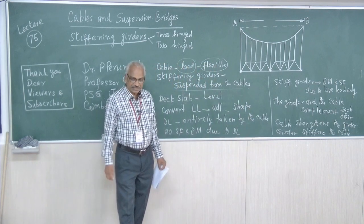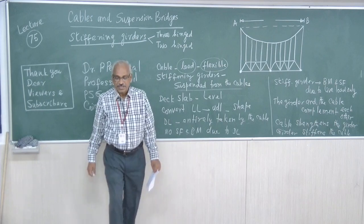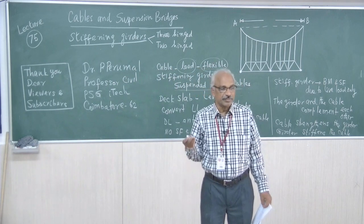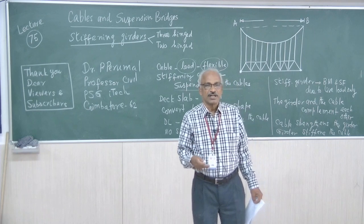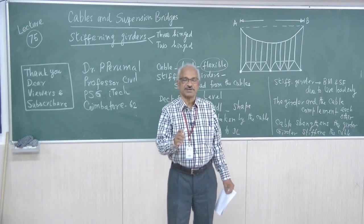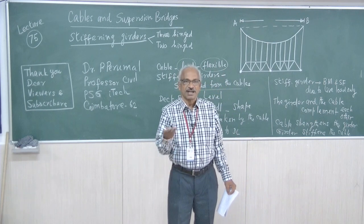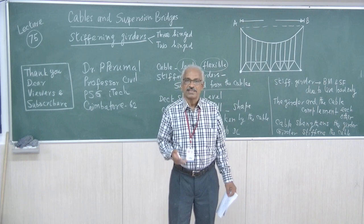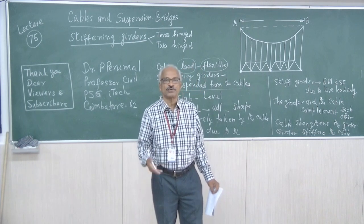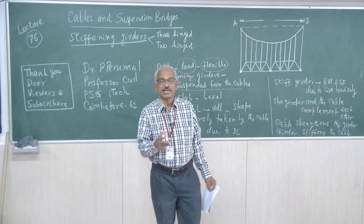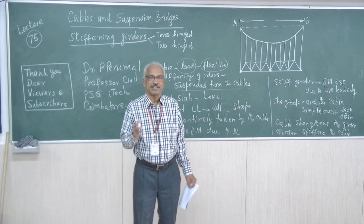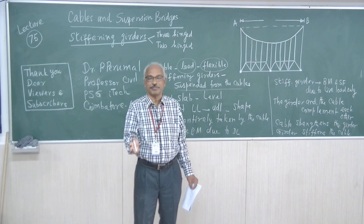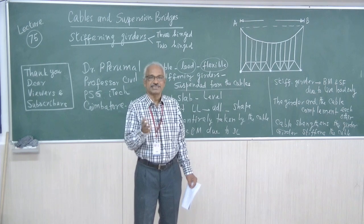By providing the stiffening girder, its function is to convert the live load — whatever it may be, whether two point loads, three point loads, or UDL partly over the span — the function of the stiffening girder is to convert the live load as uniformly distributed load, and that load will be transferred to the cable as UDL. Therefore, when the live load is converted as UDL and transmitted to the cable, whatever may be the load on the deck slab, the cable will be subjected to UDL. When the cable is subjected to UDL, the parabolic shape of the cable will be maintained and thereby the deck slab will be fairly level.